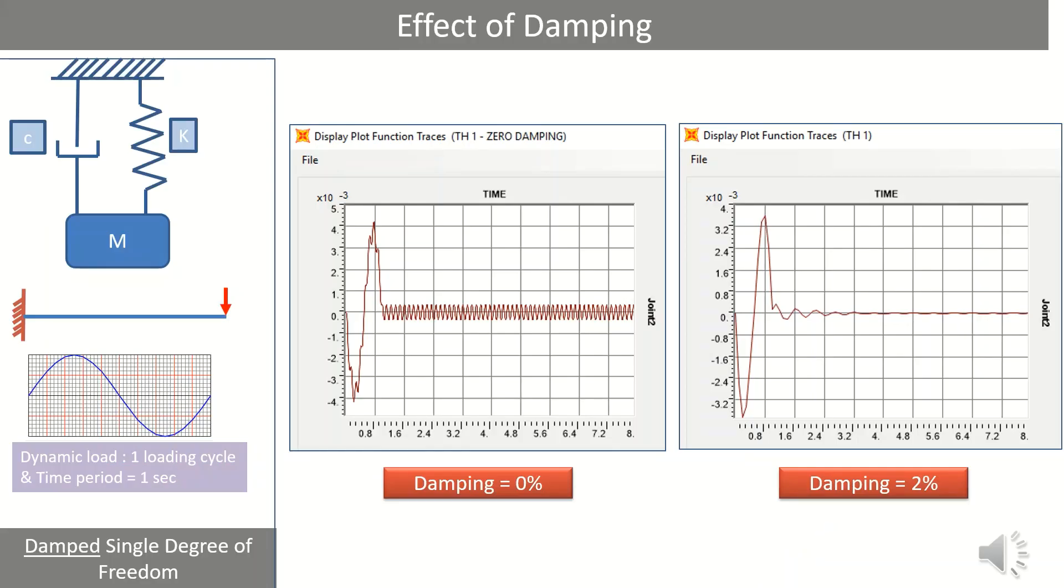Before we start, let's try to understand what is damping through an example of single degree of freedom. In both cases, dynamic load is applied having one cycle and one second as a time period. Let's observe the response of the structure with and without damping.